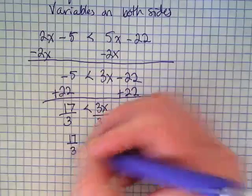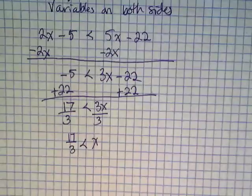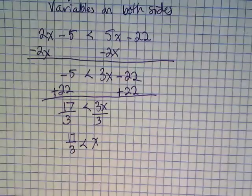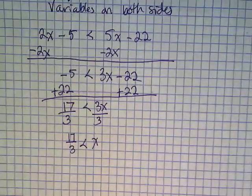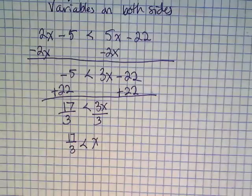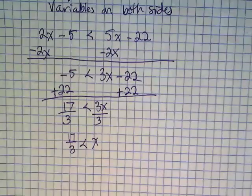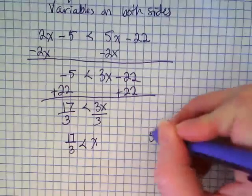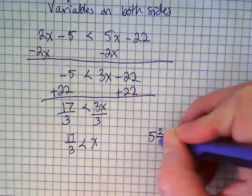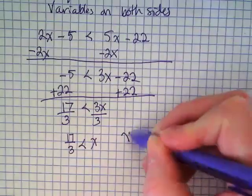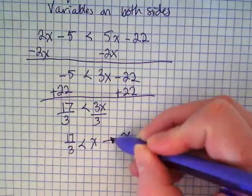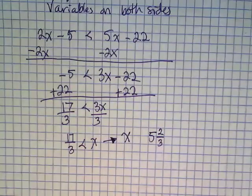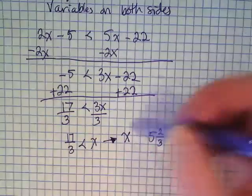17 over 3 is less than x. A couple things here. I will normally tell you we just leave fractions as they are, but this will be easier to graph if we know what 17 over 3 equals, won't it? Yes. What does 17 over 3 equal? 3 goes into 17 five times with 2 left over. So it's 5 and 2 thirds. Notice what I'm doing here. I'm rewriting this with the x to the left, the constant rewritten to the right. What's going to happen to my symbol? The left sand is going to become a... It's a flip.